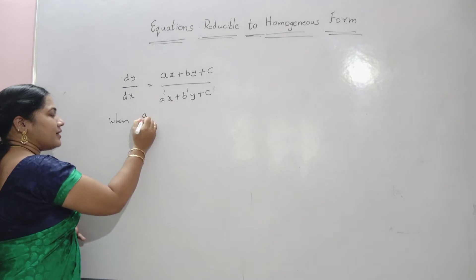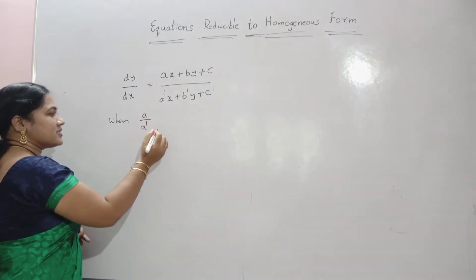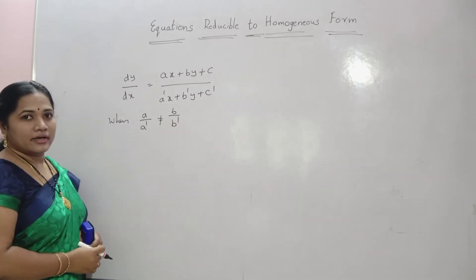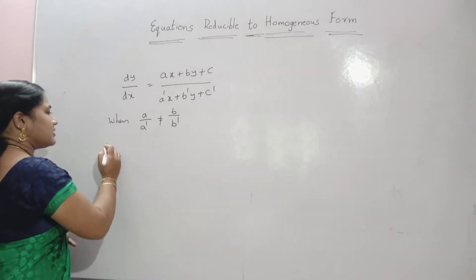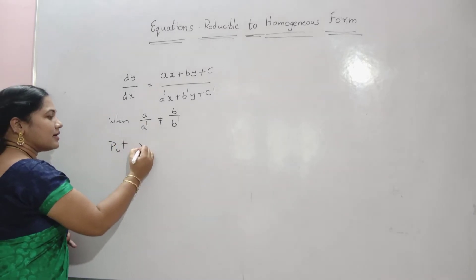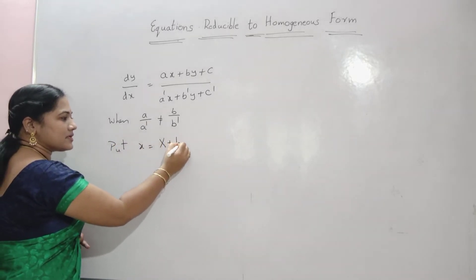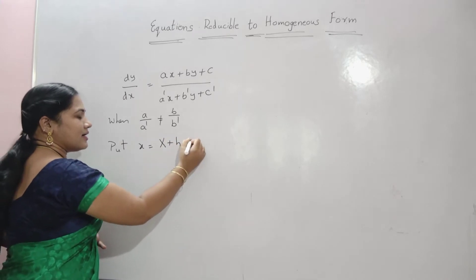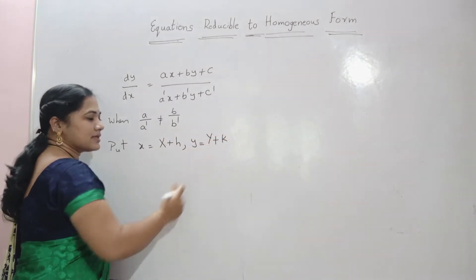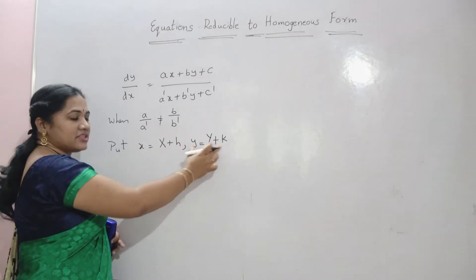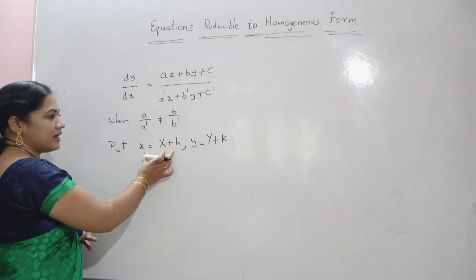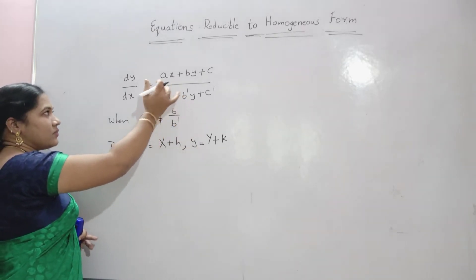When a by a-dash is not equal to b by b-dash, in that case put x equals to capital X plus h and y equals to capital Y plus k, where h and k are constants, and substitute the x and y values in the given equation.